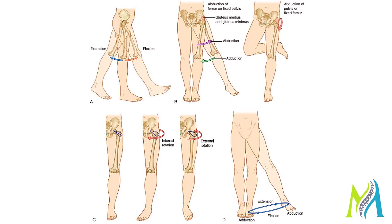The second function of the lower limb is movement — the locomotion. It is called the locomotor system. This involves integration of movements: all joints of the lower limb work together to change the position of the foot on the ground, which is what we need during walking.